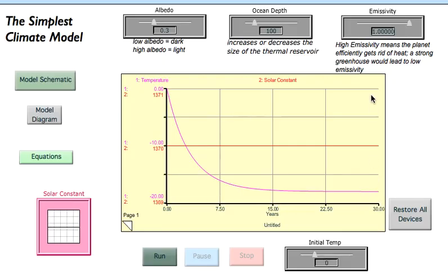And that's in part because we have the emissivity here set at one, and that means that the planet, this model planet, has no greenhouse whatsoever. So this is the presumed temperature of our planet if we had no greenhouse.